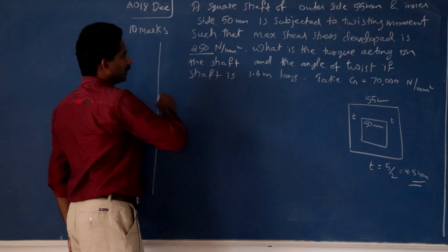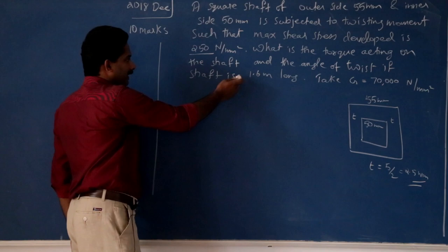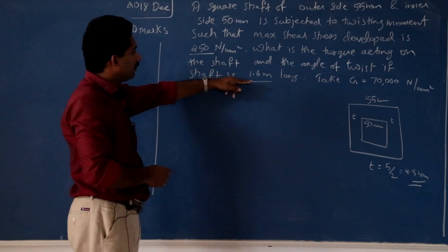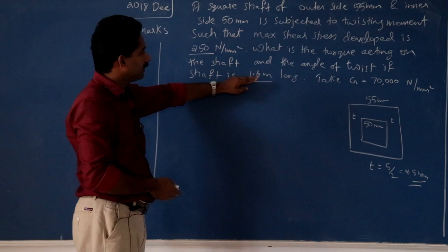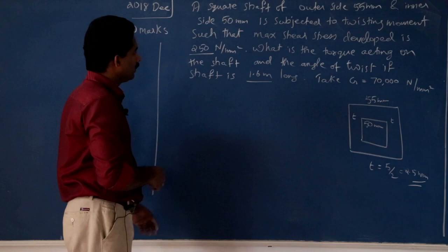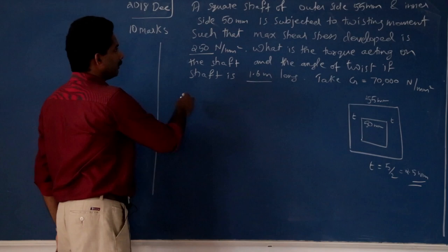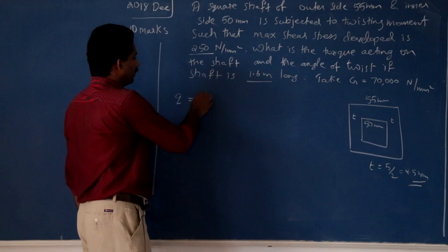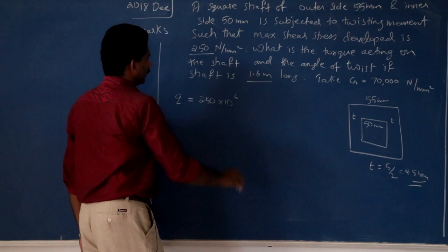Similar to the previous problem — which is subjected to a twisting moment such that the maximum shear stress is 250 newton per mm squared. Find the torque acting on the shaft and the angle of twist. If the shaft is 1.6 meter long, you will get the angle in radians. Starting with q — shear flow value — it is constant because thickness is constant. Take the thickness at any section. Tau is 250 newton per mm squared.